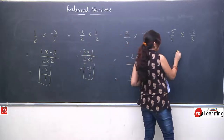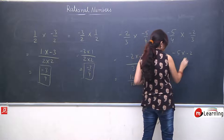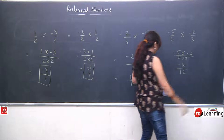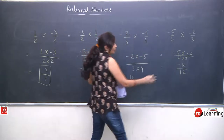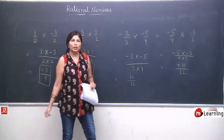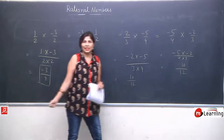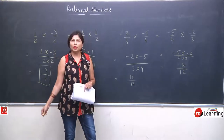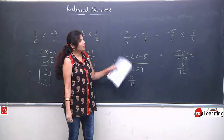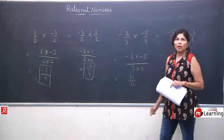Yahan par bhi similarly: minus 5 into minus 2 is plus 10 upon 4 into 3 is 12. So, minus times minus gives plus 10 — here also plus 10. LHS is 10 by 12, RHS is also 10 by 12, means commutative property is applicable for multiplication.